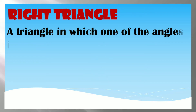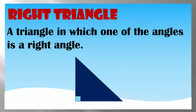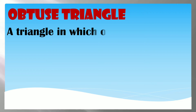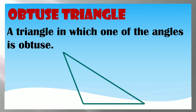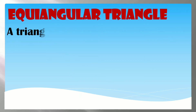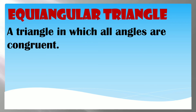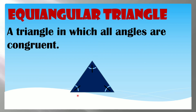A Right Triangle is a triangle in which one of the angles is a right angle. An Obtuse Triangle is a triangle in which one of the angles is obtuse. An Equiangular Triangle is a triangle in which all angles are congruent, meaning all angle measures are equal.